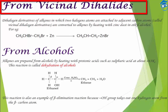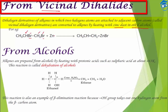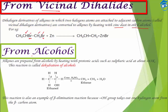Next, from vicinal dihalides: a vicinal dihalide has two halogen atoms attached to adjacent carbon atoms. To prepare an alkene, take a vicinal dihalide and heat it with zinc dust in ethyl alcohol. On heating with zinc dust, both halogen atoms are removed and we get an alkene.